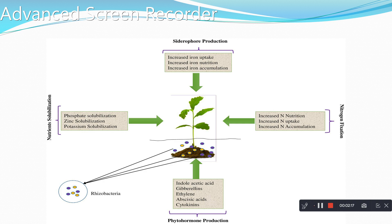Most of the phytohormone production, e.g. indole acetic acid, acetic acid, gibberellin, ethylene, abscisic acid, and cytokinins — these are some of the phytohormones intake by plants for good yield. And nutrient solubilizing, i.e. phosphate solubilization, zinc solubilization, and potassium solubilization. All these nutrients can be taken up by the plants with the help of rhizobacteria.